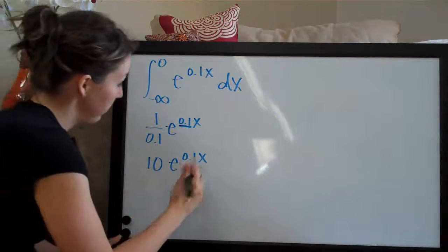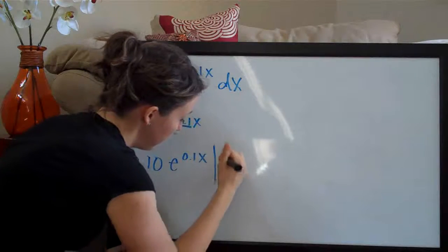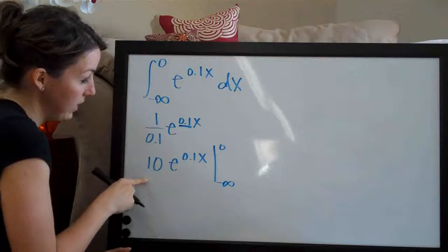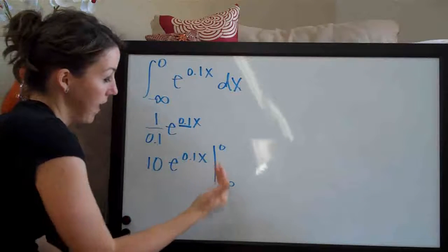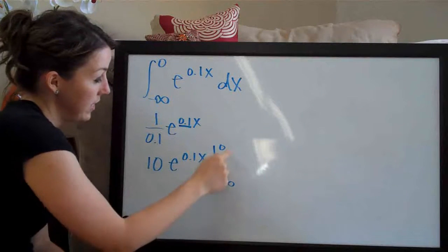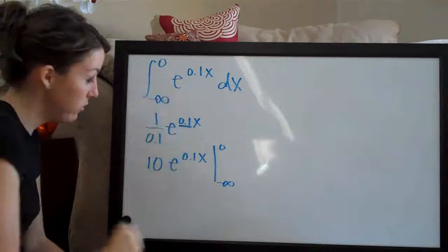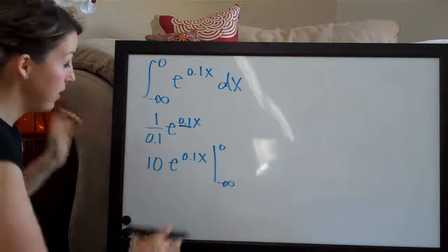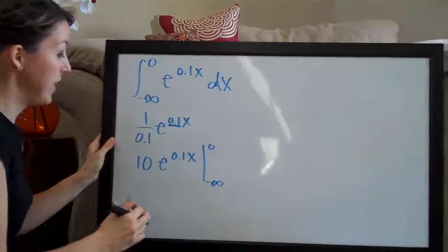And now what you need to do is evaluate on the range negative infinity to zero. So after you've taken the integral, you go ahead and draw the line. And that signifies that you're going to evaluate everything from negative infinity to zero. You keep negative infinity on the bottom and zero on the top just like they were originally. And now you're going to go ahead and evaluate. The way that works, we plug in zero first and then negative infinity.